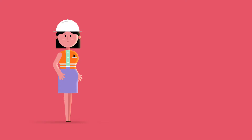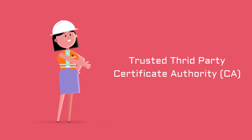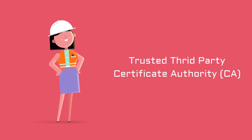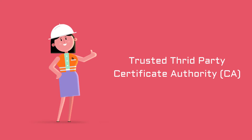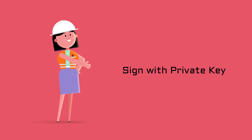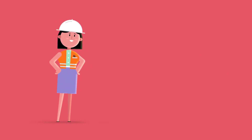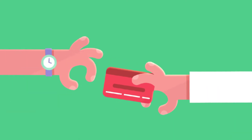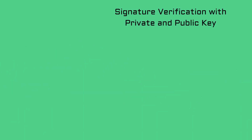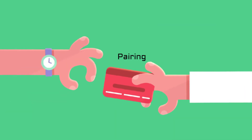A trusted third party, known as a certificate authority (CA), who also holds a private cryptographic key, will sign the document to associate, certify, and identify each entity. Each entity uses a private key to sign certificates, known only by them, and another key derived from that called the public key, which is used for verifying signatures.